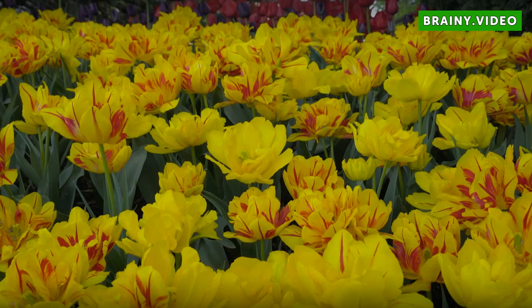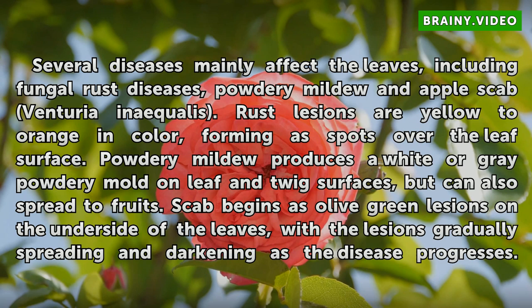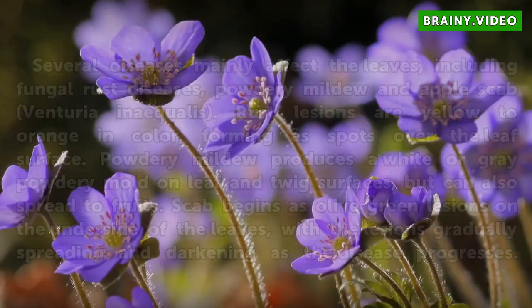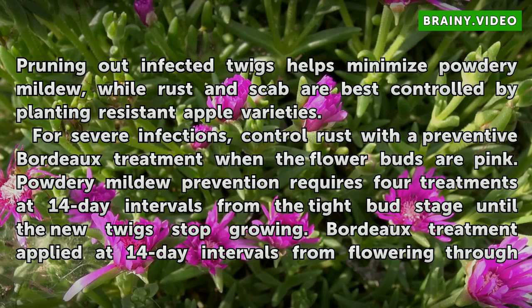Fungal Issues. Several diseases mainly affect the leaves, including fungal rust diseases, powdery mildew, and apple scab (Venturia inaequalis). Rust lesions are yellow to orange in color, forming as spots over the leaf surface. Powdery mildew produces a white or gray powdery mold on leaf and twig surfaces, but can also spread to fruits. Scab begins as olive green lesions on the underside of the leaves, with the lesions gradually spreading and darkening as the disease progresses. Pruning out infected twigs helps minimize powdery mildew, while rust and scab are best controlled by planting resistant apple varieties.